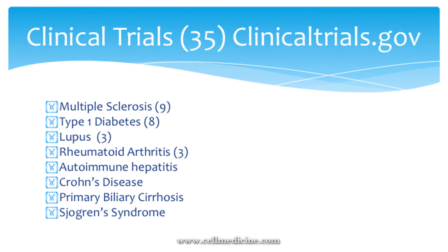A quick search on ClinicalTrials.gov—the NIH database of all current clinical trials—for MSCs used in autoimmune diseases shows a significant list. Multiple sclerosis is number one with nine clinical trials currently ongoing, type one diabetes is number two with eight, and lupus and rheumatoid arthritis round out the top indications. This tells us that worldwide, many researchers are doing studies on MSCs for autoimmune diseases.